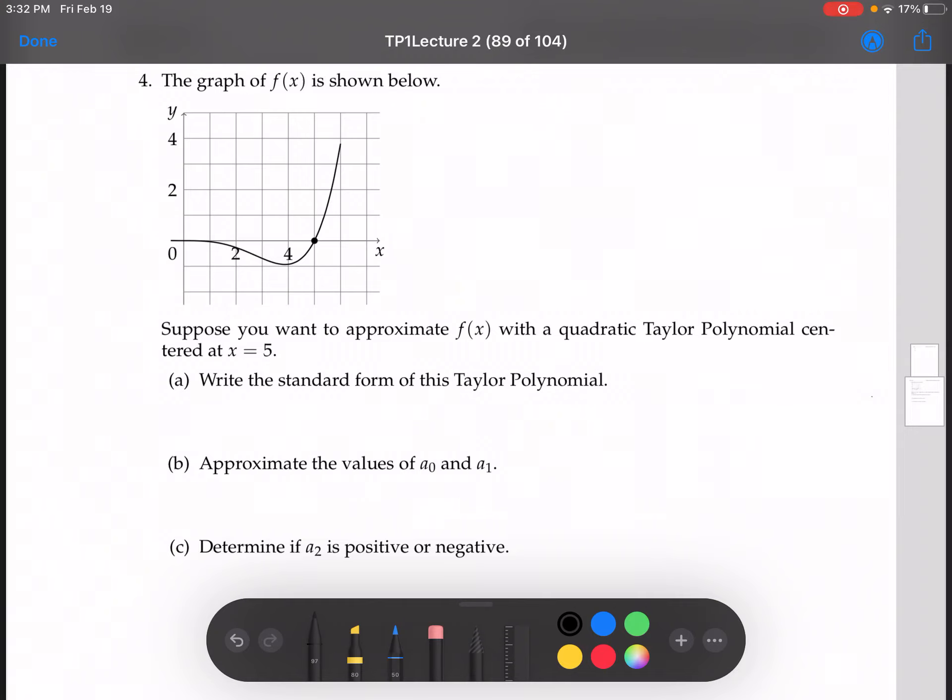All right, in this one, we're given the graph of f of x. You'll notice that we don't have the rule for f of x, all we have is the graph. And we are to suppose that we want to approximate f of x with the quadratic Taylor polynomial centered at x equals 5. Now, when we see quadratic Taylor polynomial, we know that that is t2 of x.